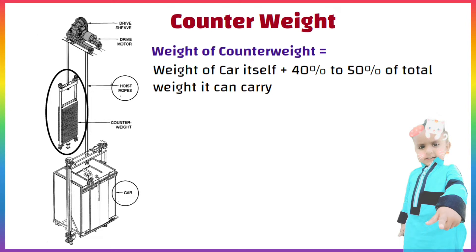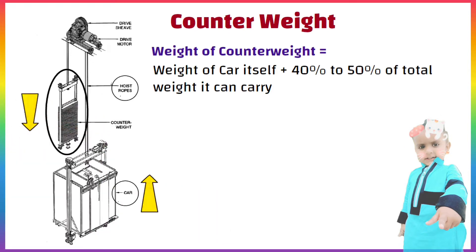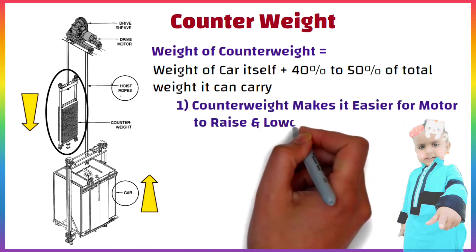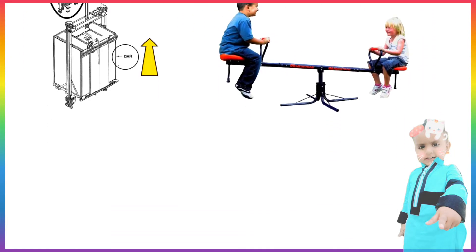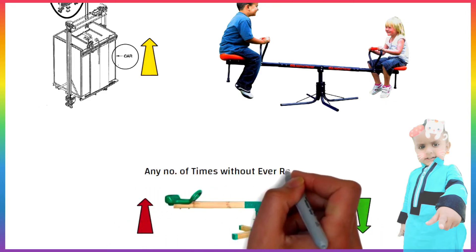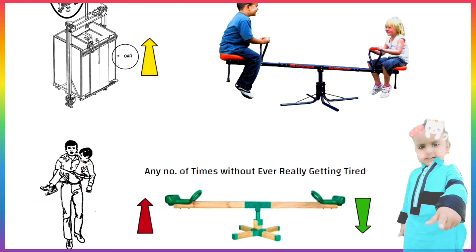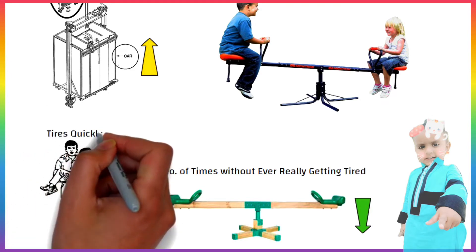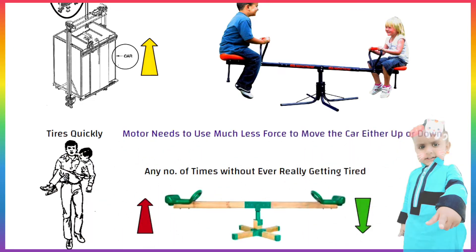As you can see in this picture, the car is located here. When the elevator car goes up, the counterweight goes down and vice versa, which helps in three ways. First, the counterweight makes it easier for the motor to raise and lower the car — just as sitting on a balanced seesaw, you can bob up and down without ever really getting tired, quite different from lifting someone in your arms. Hence the motor needs to use much less force to move the car either up or down.